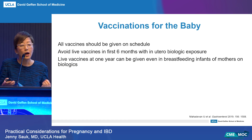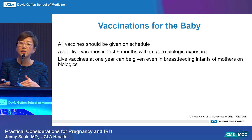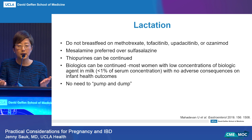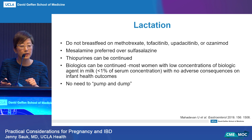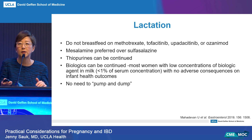For postpartum considerations: all vaccines should be given on schedule. Live vaccines in the first six months with in utero biologic exposure may be avoided — this really only applies to rotavirus. Live vaccines at one year can be given in breastfeeding infants of mothers on biological therapy. For lactation, the only therapies we need to limit are methotrexate, tofacitinib, upadacitinib, and ozanimod. Mesalamines are preferred over sulfasalazine due to a small risk of hemolysis with sulfasalazine. Thiopurines can be continued — no need to pump and dump. Biologics pass at low concentrations to the baby with no adverse consequences to infant health outcomes.